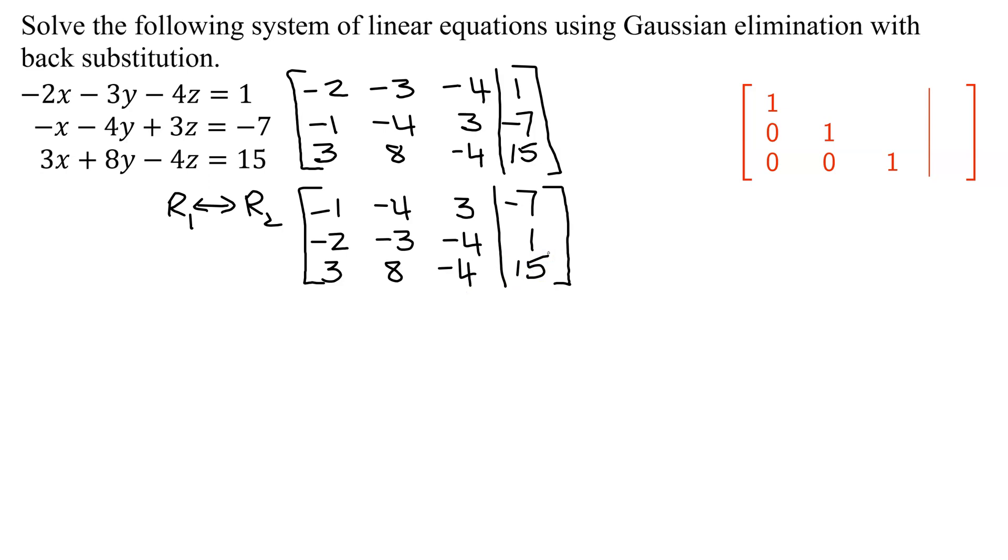Now I'm going to multiply row 1 by negative 1 to get my leading term to be a 1. So my instructions are negative 1 times row 1, put it in row 1. When I multiply a row by negative 1, it just flips all my signs. So I'm going to get 1, 4, negative 3, and positive 7. Rows 2 and 3 are going to stay exactly as they are.